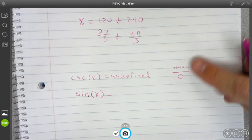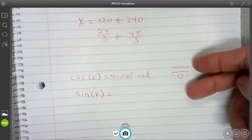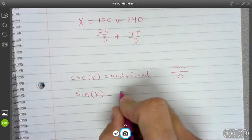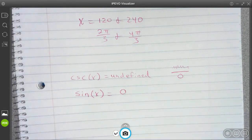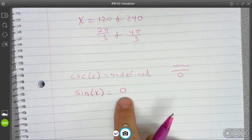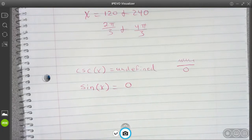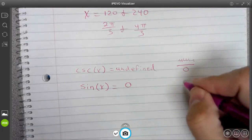So what I'm going to do is I'm going to rewrite it in terms of sine. But I'm going to reciprocate this. I'm going to flip this so that I get 0 on top. So this is my actual equation. I just want to find where sine of x is equal to 0.